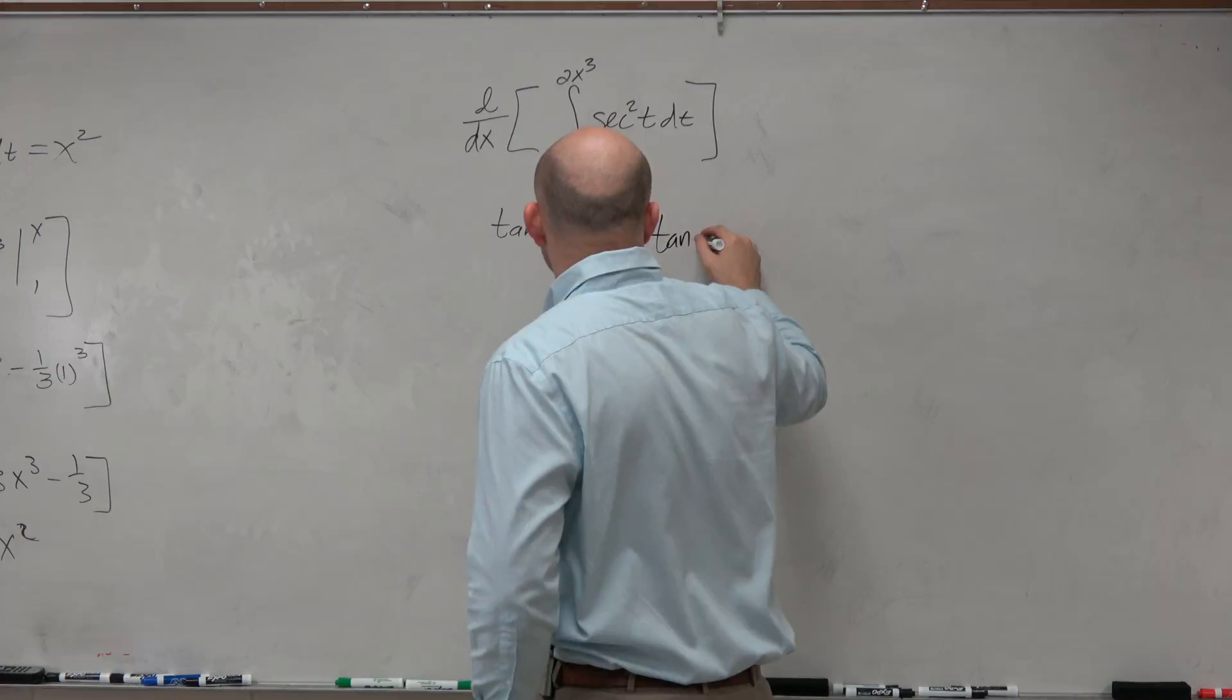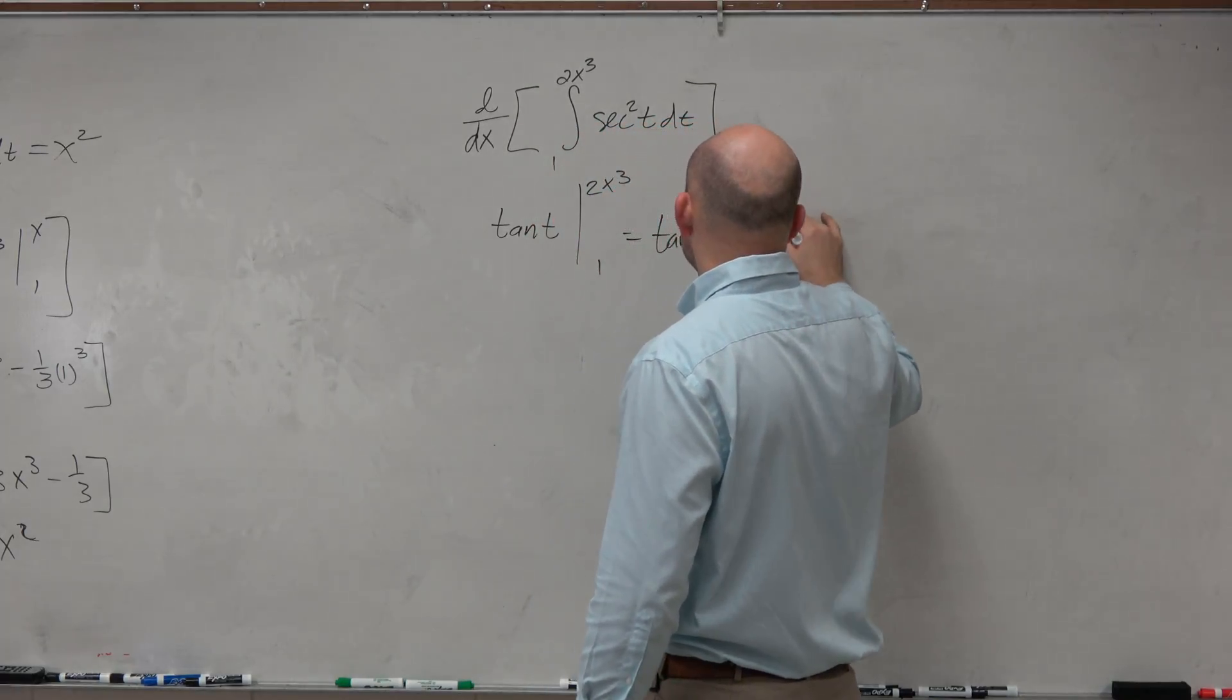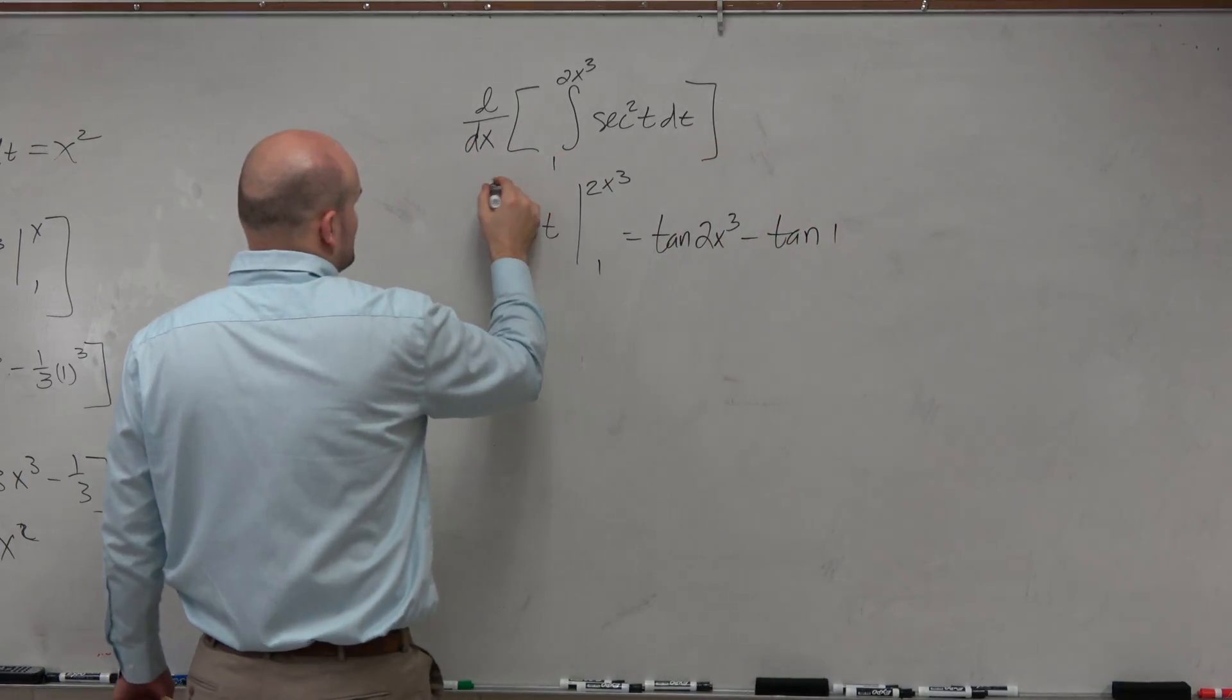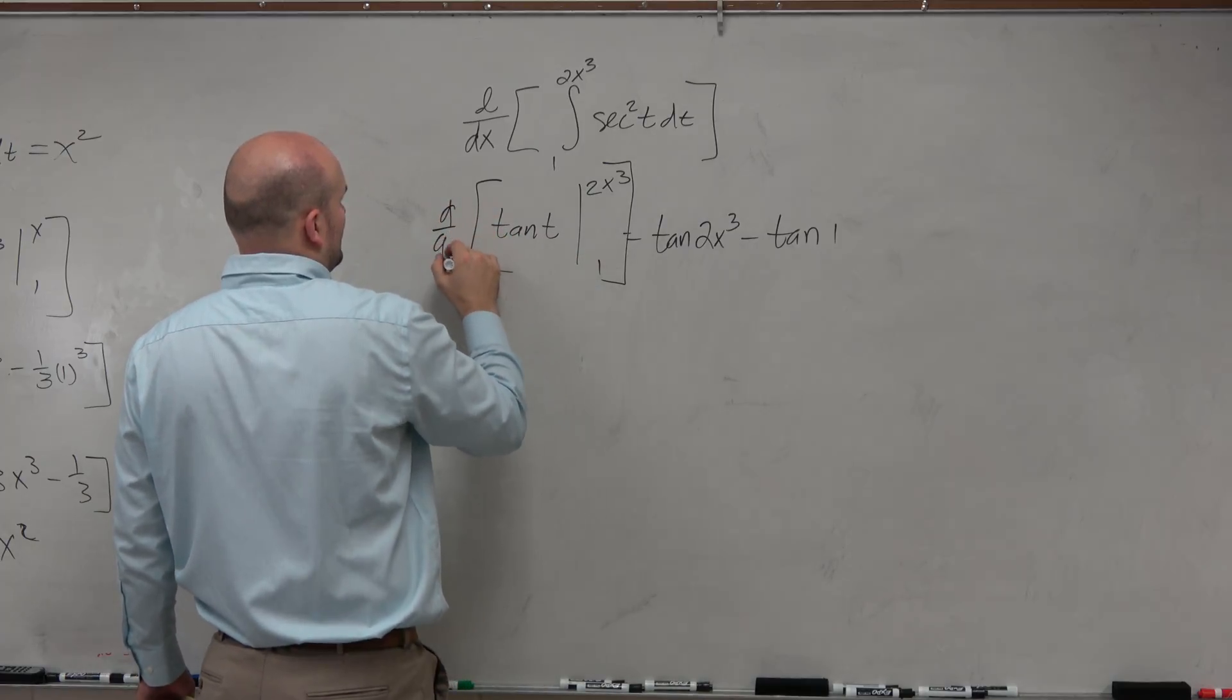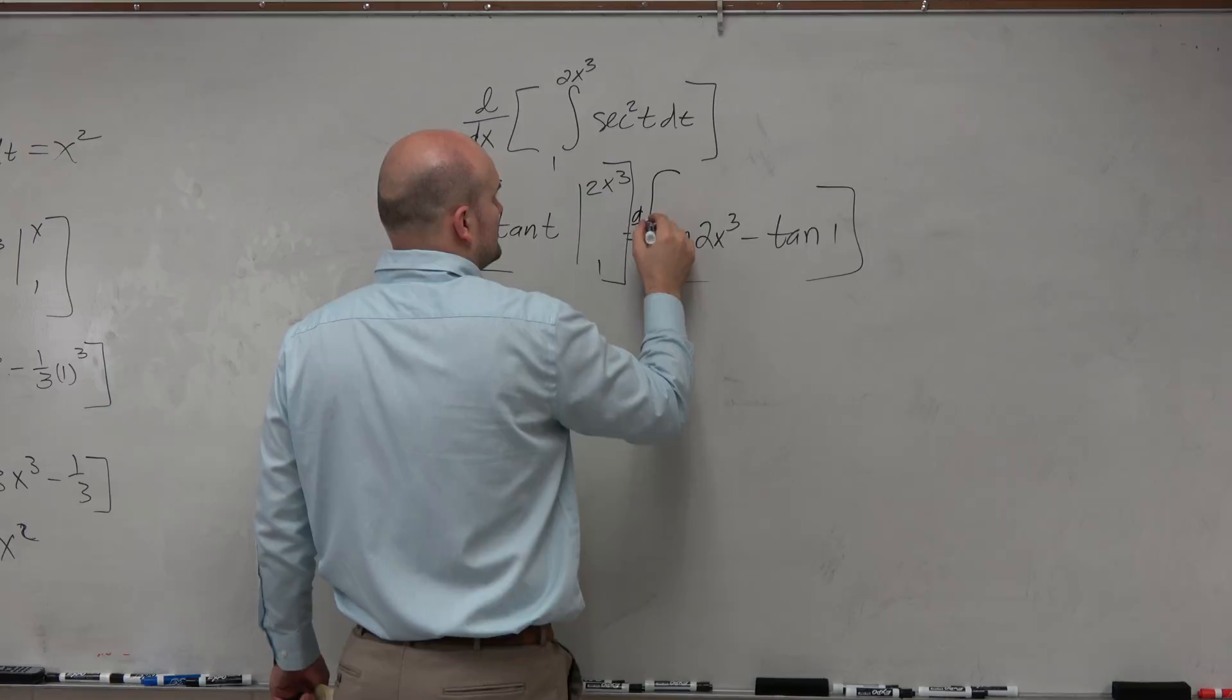So we have tangent of 2x cubed minus tangent of 1. I'm sorry, that is d over dx. So that turns into d over dx.